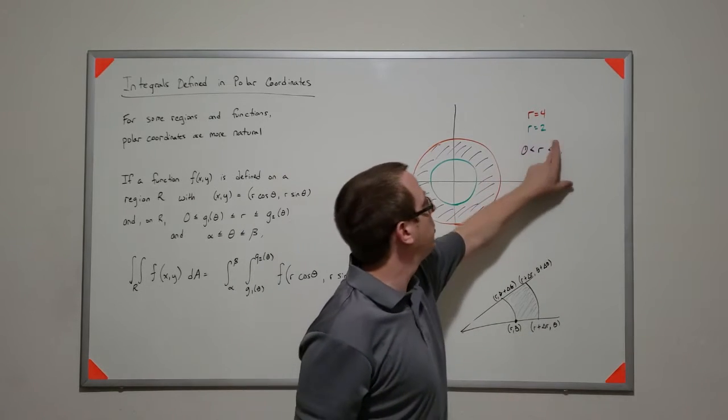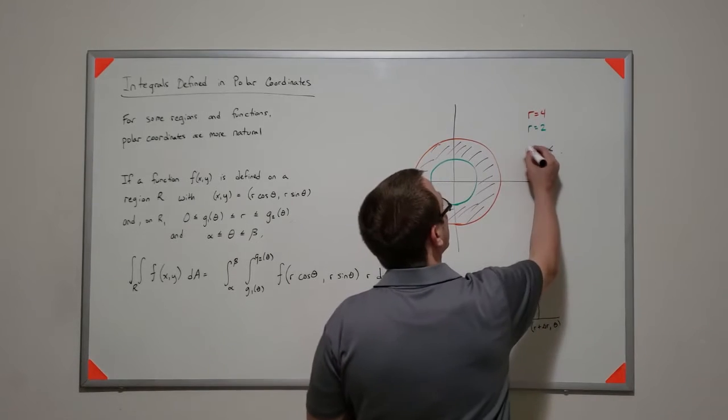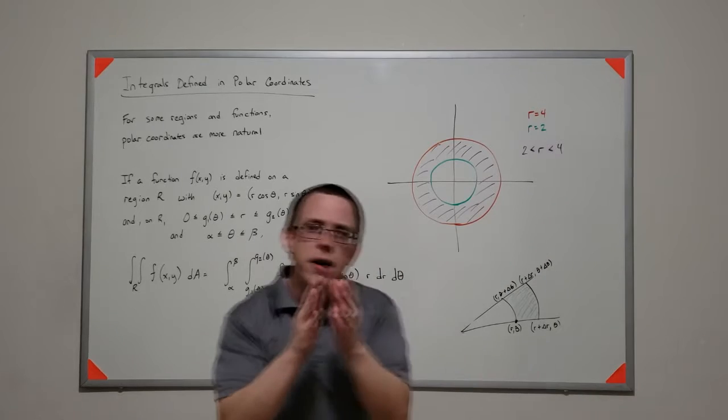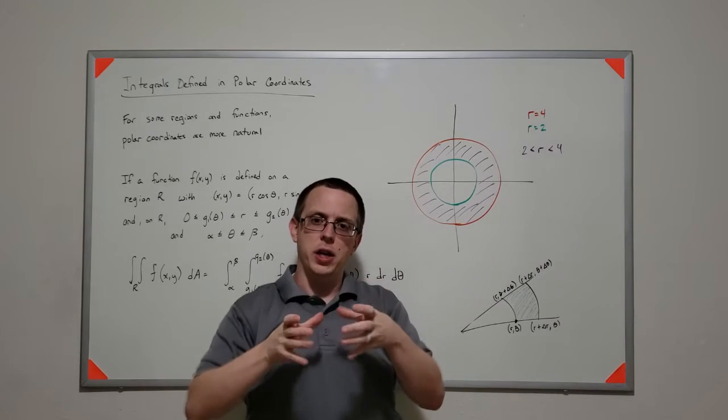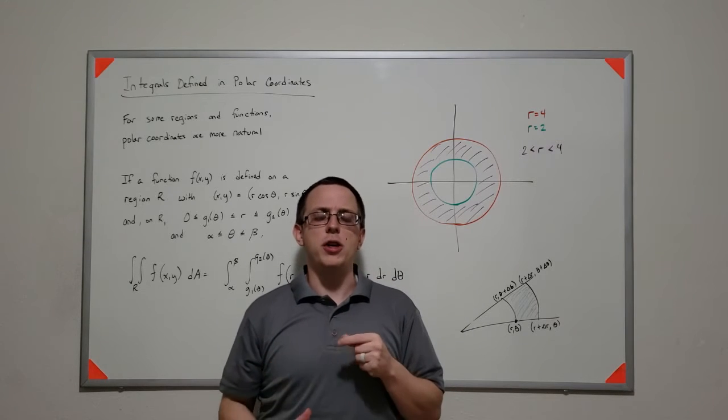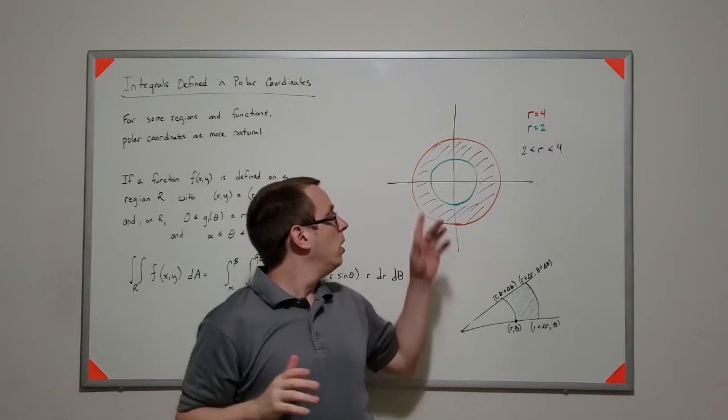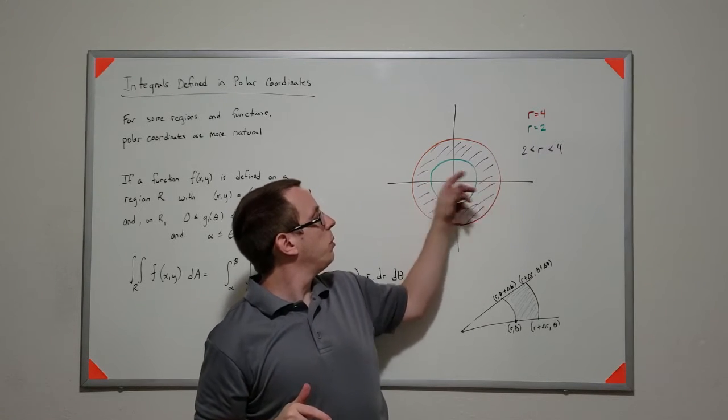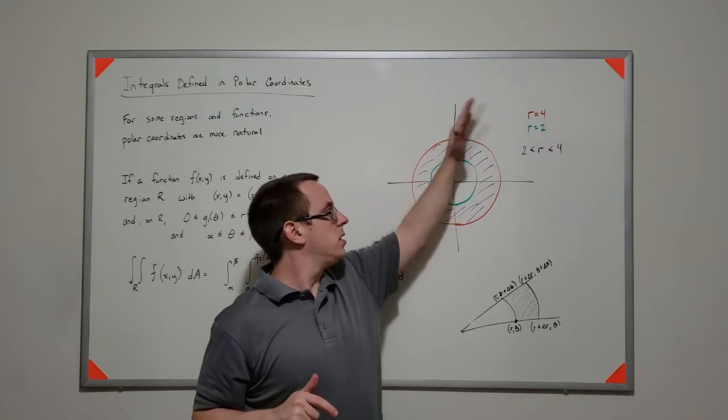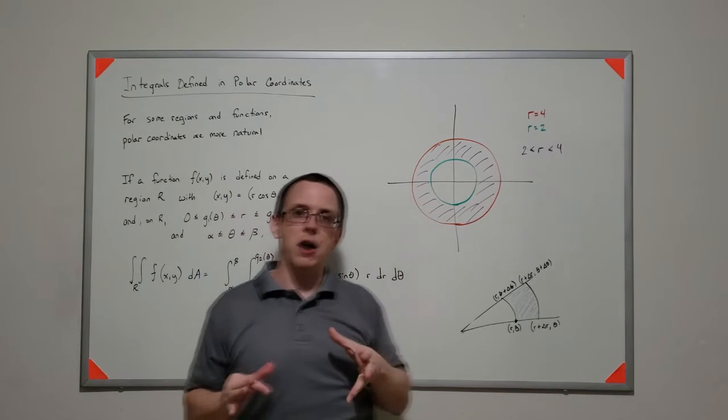Whoops, that should be 2 to 4. So if I have that region, it kind of makes sense to, instead of trying to figure out the limits of integration, where I say, well, the limit goes from x goes from 2 to 4, but it also goes from negative 2 to negative 4, and y has this function. So you probably have to slice it a couple of different ways, and you'd have to think about it.